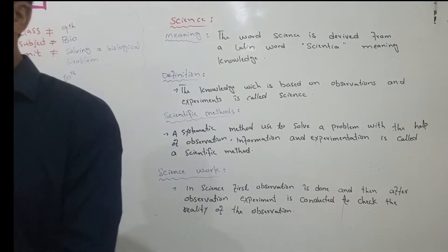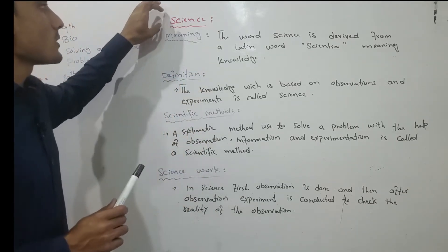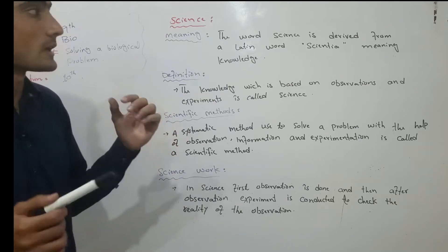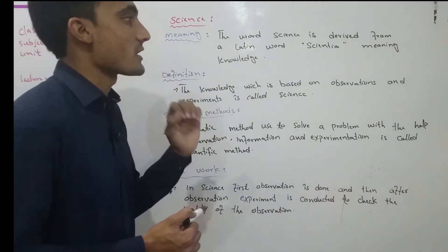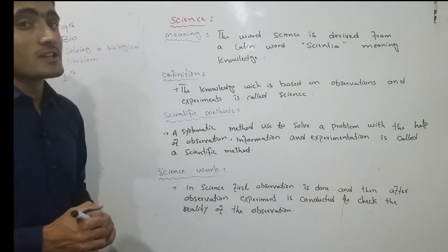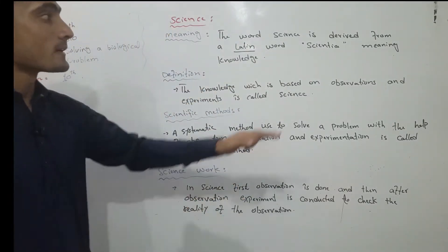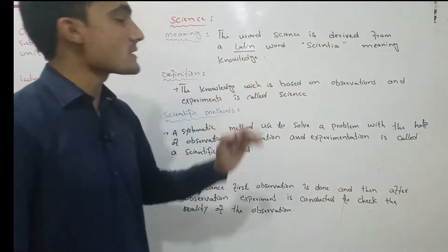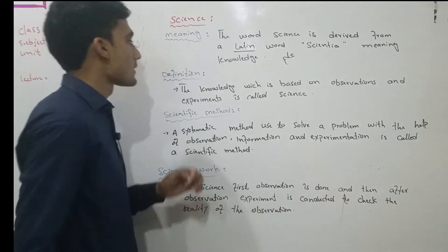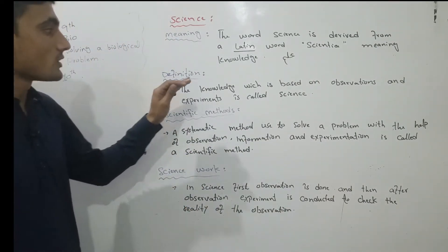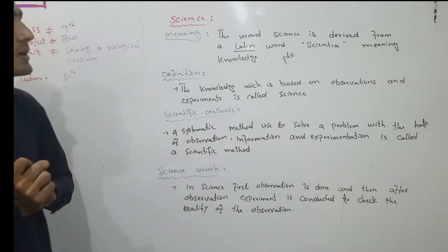Page number 24, topic: The Biological Method. First we will define science. The word science is derived from a Latin word 'scientia,' which means knowledge. Science comes from this Latin word 'scientia,' and its meaning is knowledge — in Pashto, 'ilim.'